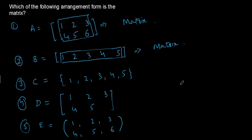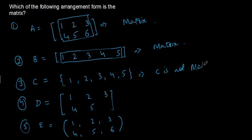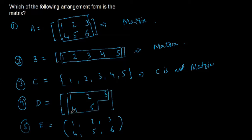In the third arrangement, indicated by C, the elements are separated by commas and are not enclosed in square brackets or parentheses. Instead they use the middle bracket, which is notation for a set. So C is a set, not a matrix. In part 4, arrangement D is enclosed in square brackets but the shape formed is not a rectangle, so D is not a matrix.